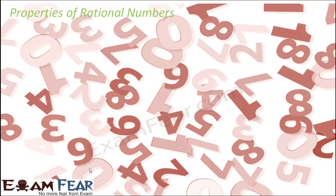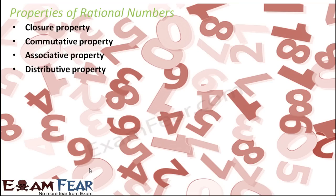Let us now talk about some of the properties of rational numbers. You might ask why we need to learn about these properties. So first let us look at the properties we will consider: closure property, commutative property, associative property, and distributive property. These properties are not only true for rational numbers — they exist also for integers, natural numbers, and whole numbers, which you have studied in your junior classes. Now we are going to talk about the same properties but for rational numbers.